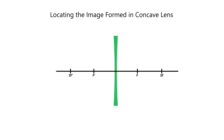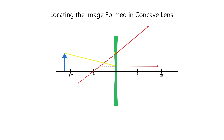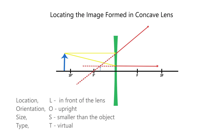For concave lens, we place the object beyond 2F prime of the lens and use PF ray and FP ray. To locate the image, we extend the two refracted rays. The image is located in front of the lens, upright, smaller than the object, and virtual.